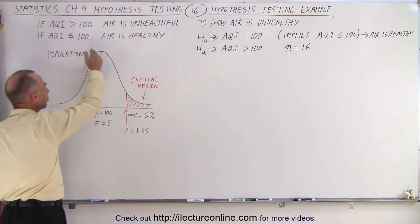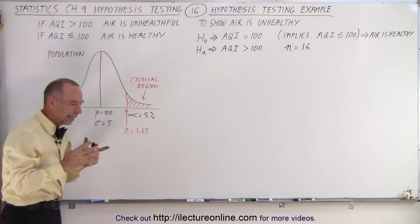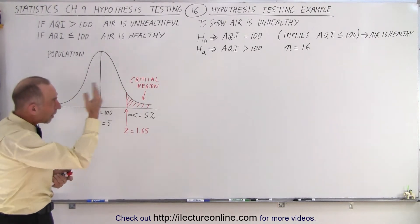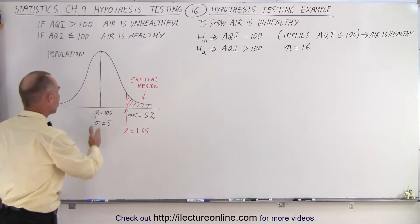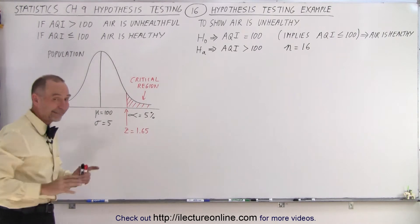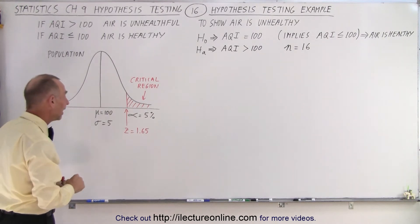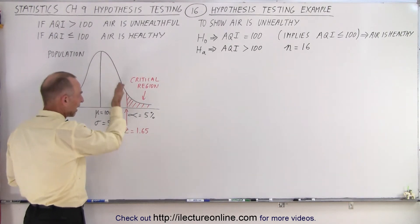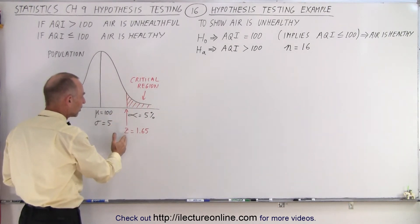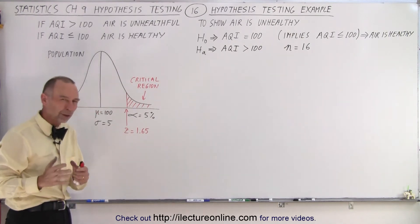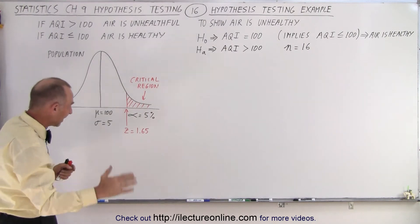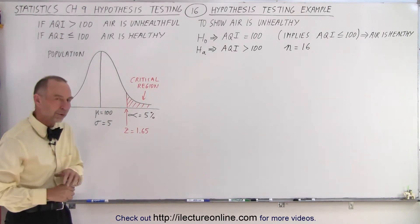So here we have the population. Now remember, the population is dependent upon what our null hypothesis is. The null hypothesis says that the AQI is 100. So we set the mean, the average level, to 100. Let's say that the standard deviation is 5. And let's say that the level of significance is equal to 5%, which means we have a critical region here where the z-score, the edge of that critical region, is 1.65. And how do we find that? We simply go to the table, we look up 5%, and that gives us a z-score of 1.65.